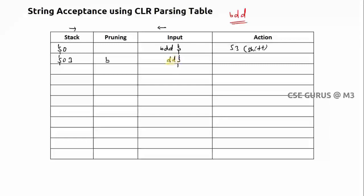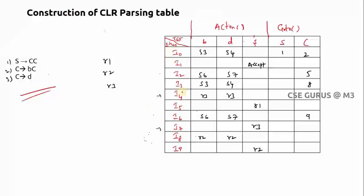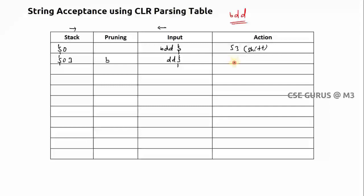If it is a shift you do only one action; if it is a reduction you follow three steps — we'll see those next. Now I3 is the top of stack and the next input symbol is D. Check I3 to D: it is S4, so shift D. Stack becomes: dollar 0 3 4, and remaining input is D dollar.